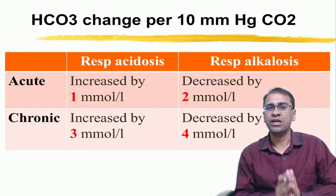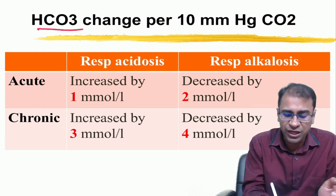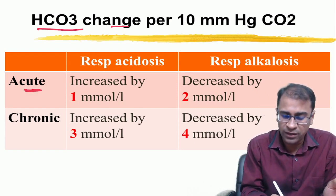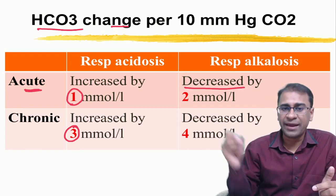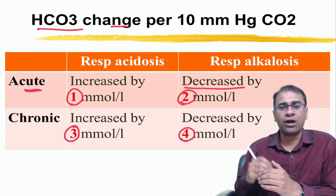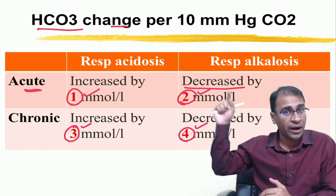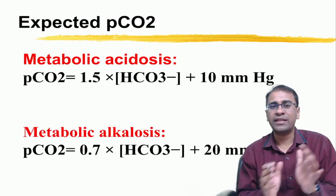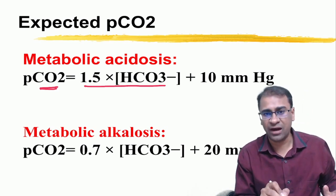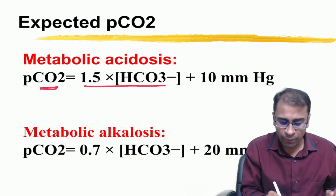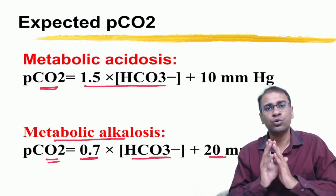For bicarb change per 10 mmHg of PCO2: in acute respiratory acidosis the bicarb rises by 1, in chronic it rises by 3. In respiratory alkalosis, bicarb decreases by 2 acutely and by 4 chronically — easy to remember as 1, 3, 2, 4. In the reverse direction: for metabolic acidosis, expected PCO2 = 1.5 × bicarb + 10 mmHg. For metabolic alkalosis, expected PCO2 = 0.7 × bicarb + 20 mmHg. These formulas help determine whether compensation is present.